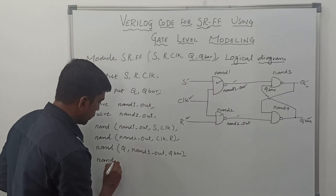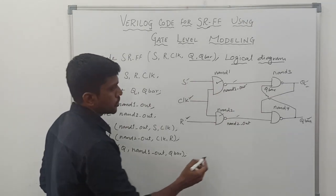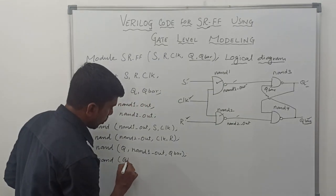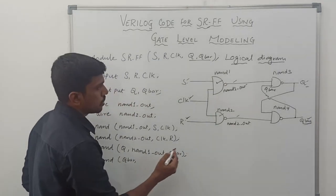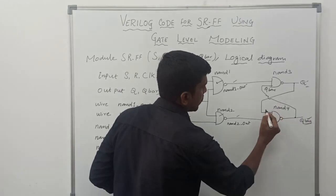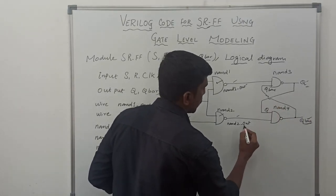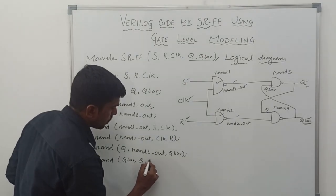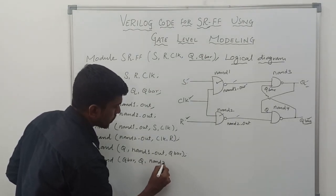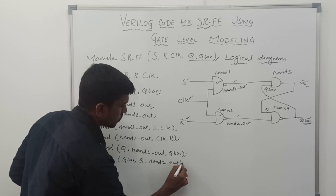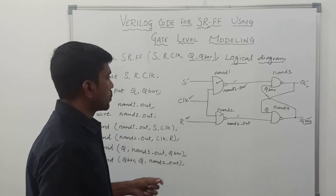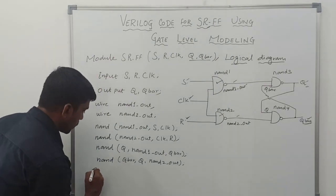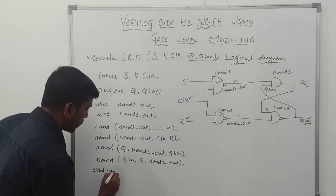Then we go to the final NAND gate, NAND4. The output is Q bar. The input values are Q and NAND2-out. All four NAND gate operations are now complete. The final instruction is endmodule.